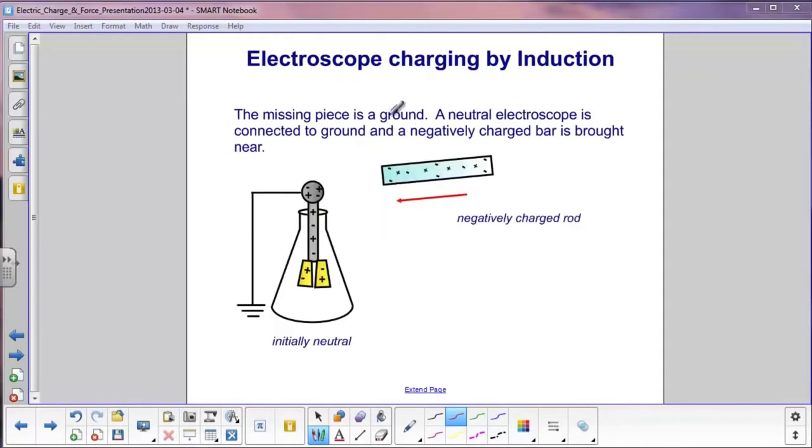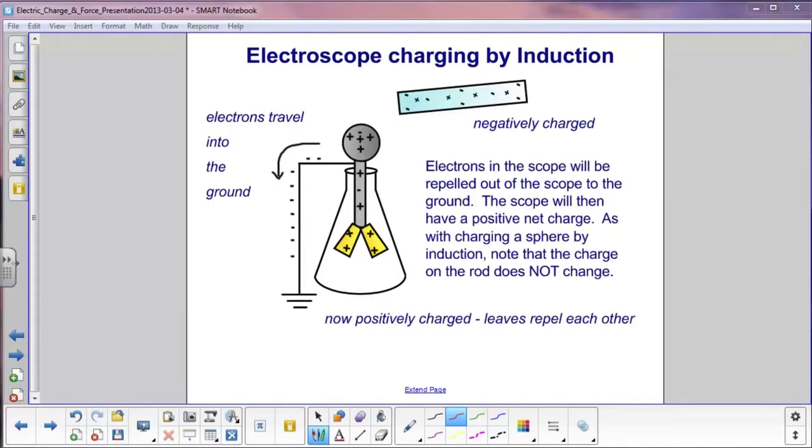The missing piece is a ground. A neutral electroscope is connected to the ground, and a negatively charged bar or rod is brought nearby. The negatively charged rod is brought near the top of the electroscope but does not touch it. So, electrons in the scope will be repelled out of the scope down to the ground.